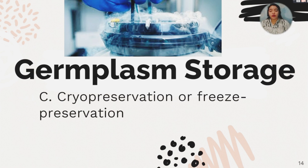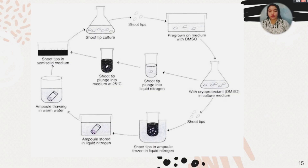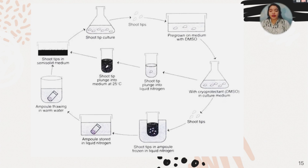Third is cryopreservation, or freeze preservation. The process of cryopreservation involves freezing certain seeds and then thawing them when ready to use. After freezing, the material undergoes thawing, and then you plant the certain meristems or tissues of the plants to produce another plant.